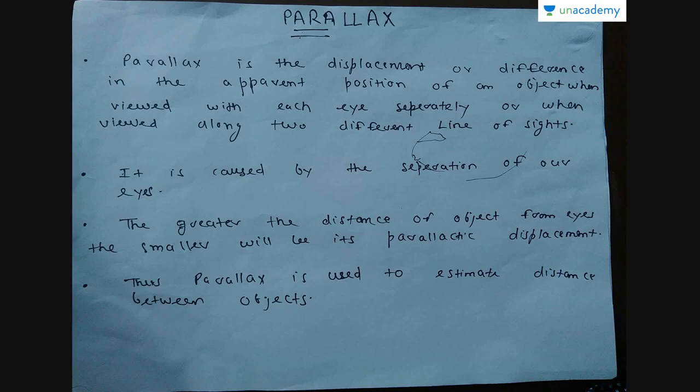Why are we studying this? We are studying this to get an idea about the distance of an object from the eye. The concept states: the greater the distance of an object from the eyes, the smaller will be its parallax displacement, and vice versa.